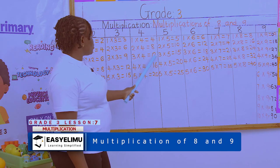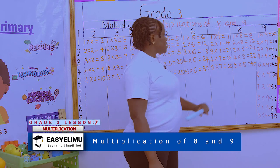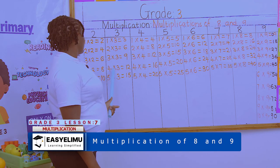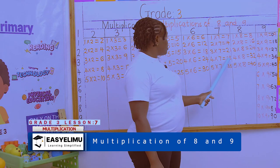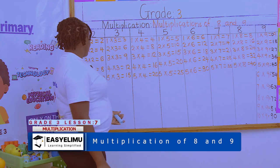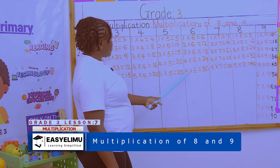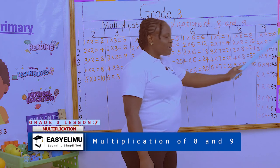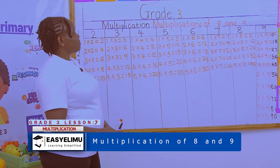Counting in 3s: 3, 6, 9, 12, 15, 18, 21, 24, 27. Counting in 4s: 4, 8, 12, 16, 20, 24, 28, 32, 36. Counting in 5s: 5, 10, 15, 20, 25, 30, 35, 40, 45.